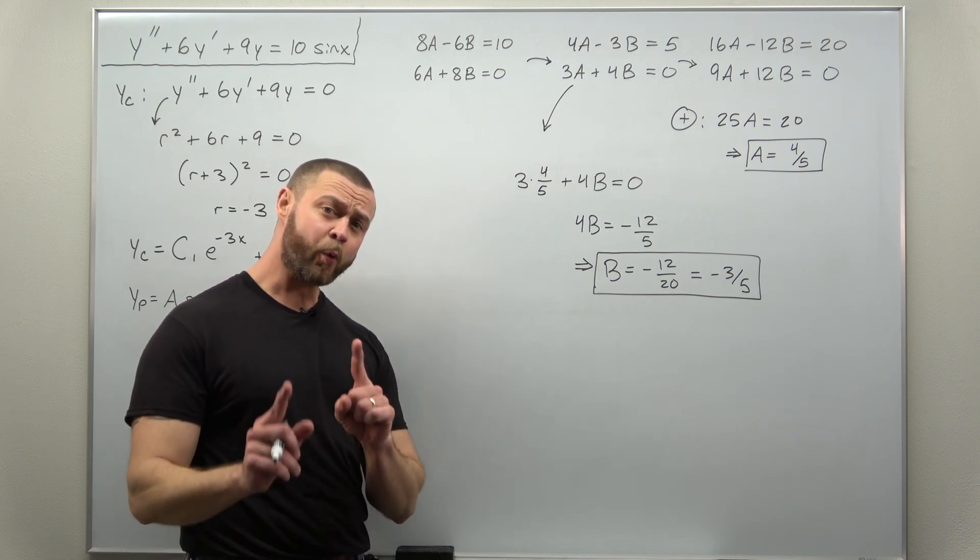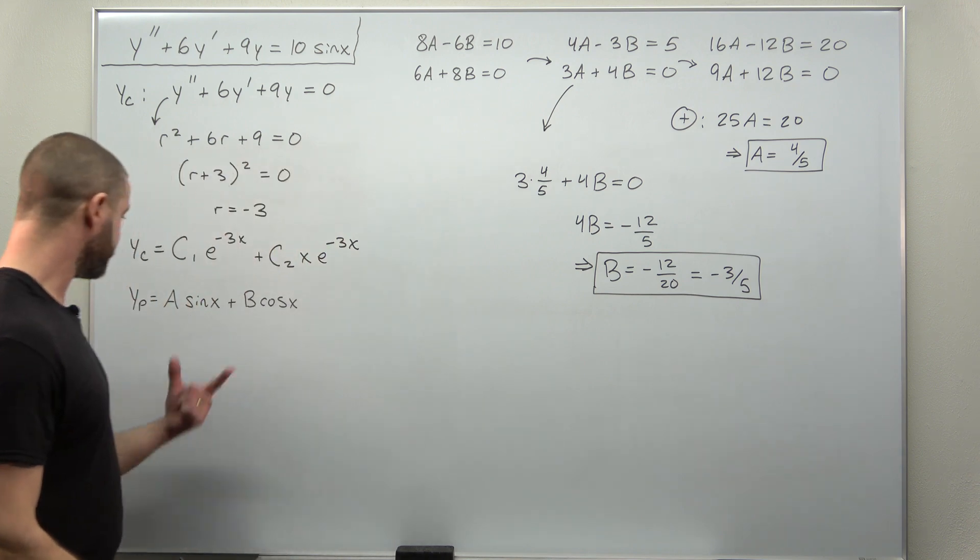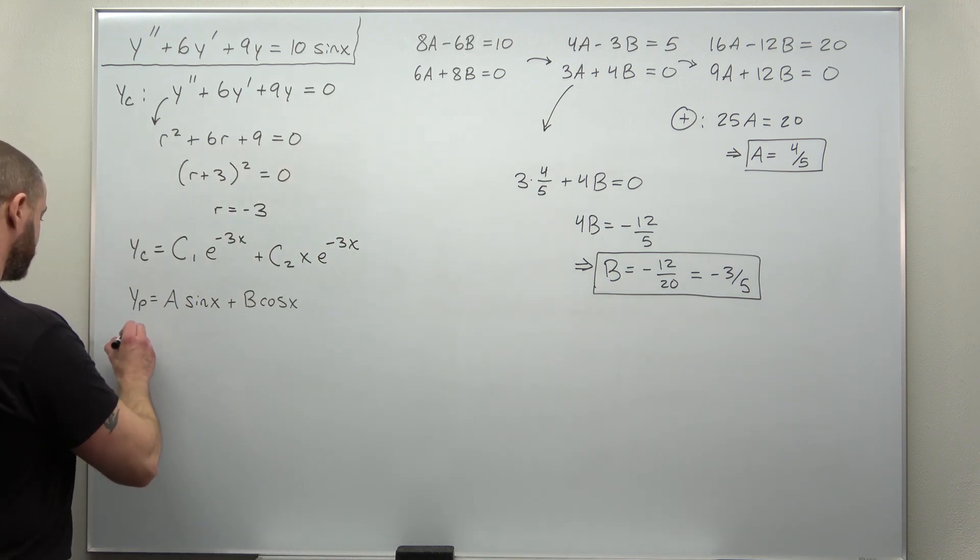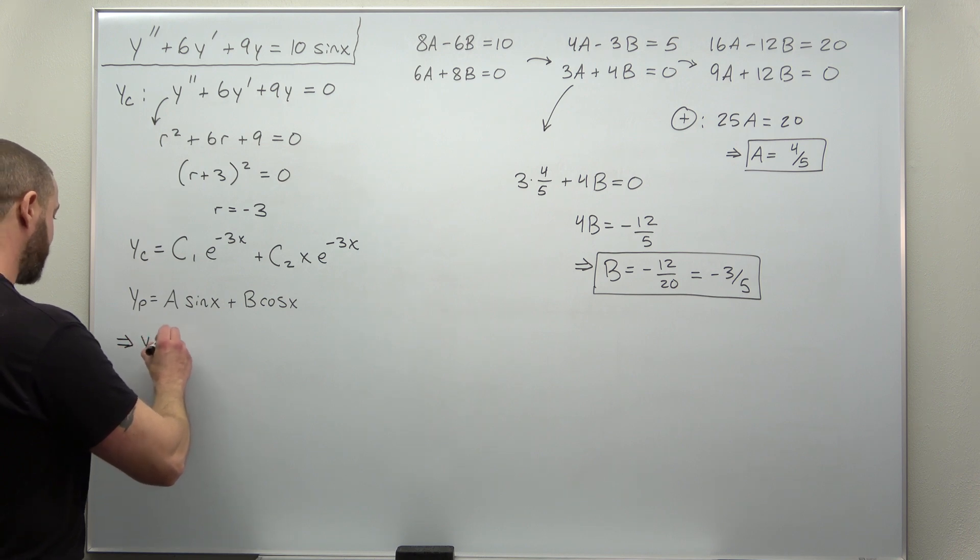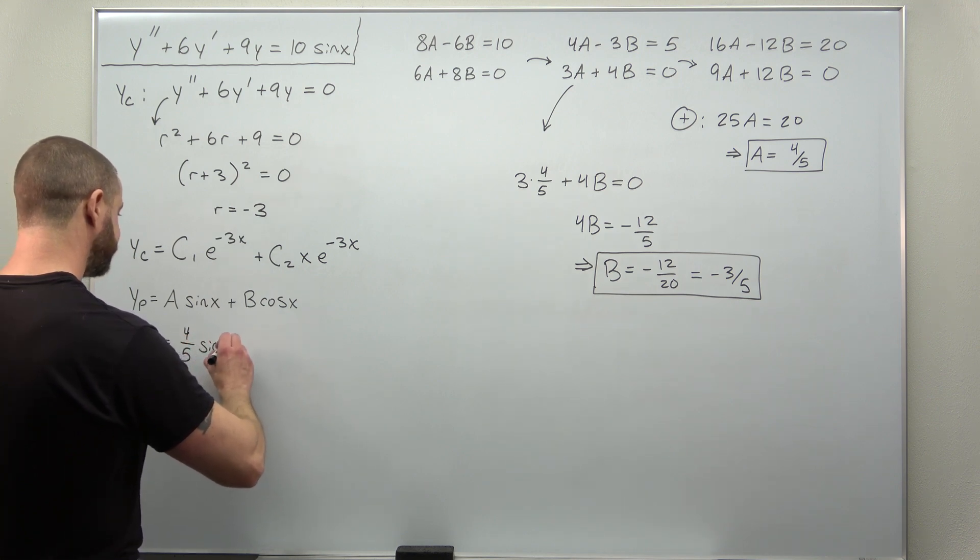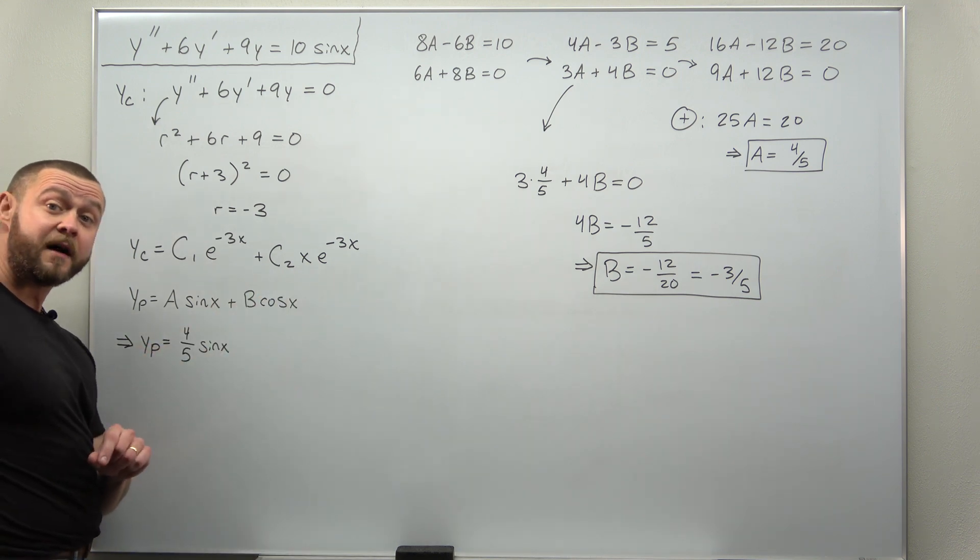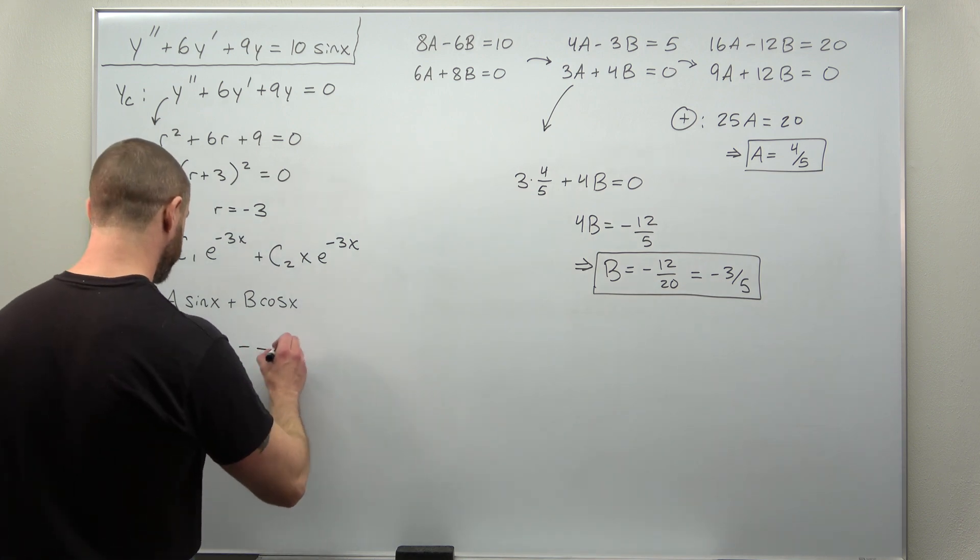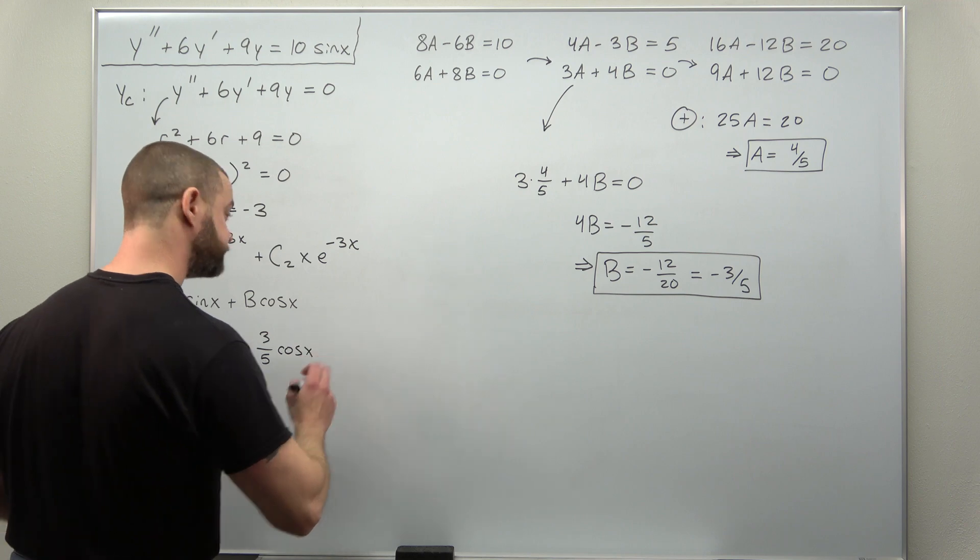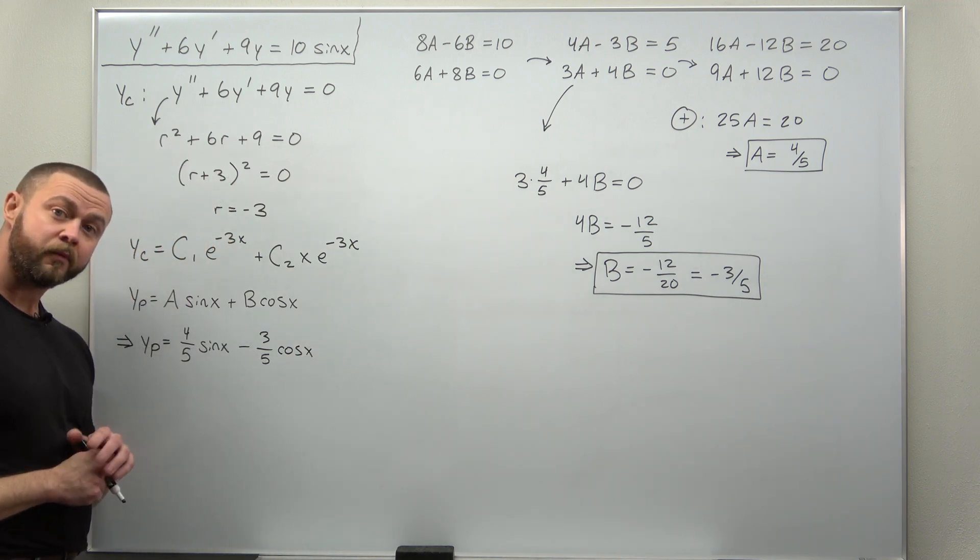a and b were part of our particular solution. We can go ahead and plug them in here. We get our form for yp. We have our value of a as 4 over 5 times sine of x, and our value for b is negative 3 over 5, which multiplies the cosine.